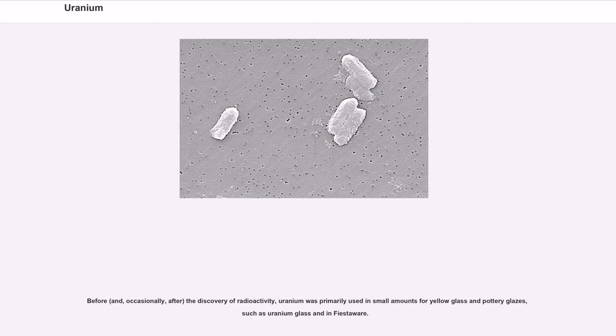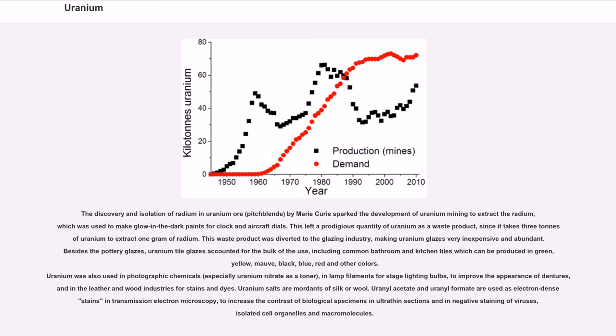Before, and occasionally after, the discovery of radioactivity, uranium was primarily used in small amounts for yellow glass and pottery glazes, such as uranium glass and in Fiestaware. The discovery and isolation of radium in uranium ore pitchblend by Marie Curie sparked the development of uranium mining to extract the radium, which was used to make glow-in-the-dark paints for clock and aircraft dials. This left a prodigious quantity of uranium as a waste product. This waste product was diverted to the glazing industry, making uranium glazes very inexpensive and abundant. Besides pottery glazes, uranium tile glazes accounted for the bulk of the use, including common bathroom and kitchen tiles which can be produced in green, yellow, mauve, black, blue, red and other colors.